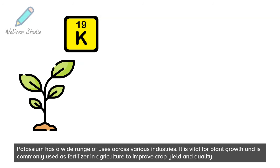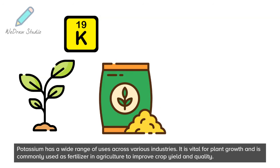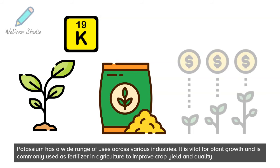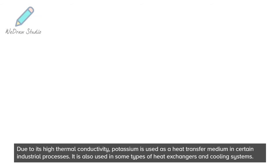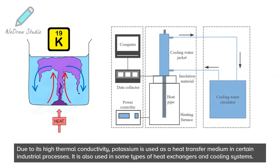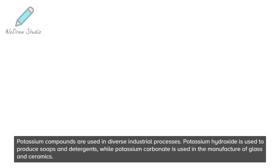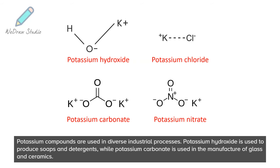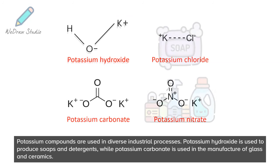Potassium has a wide range of uses across various industries. It is vital for plant growth and is commonly used as a fertilizer in agriculture to improve crop yield and quality. Due to its high thermal conductivity, potassium is used as a heat transfer medium in certain industrial processes, including some types of heat exchangers and cooling systems.